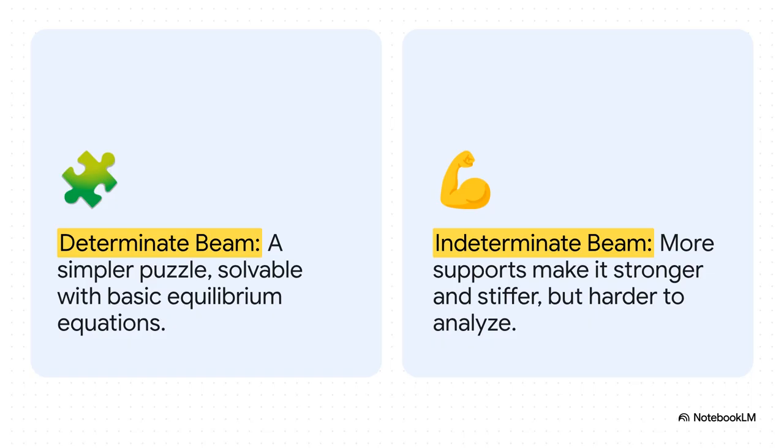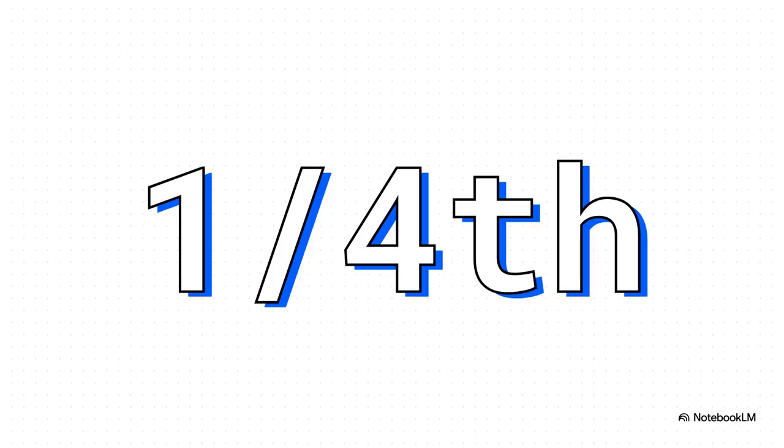So you're probably asking, why on earth would an engineer make their own life harder like this? Well, just look at this comparison. The beam on top, that's our simple determinant one. Easy to analyze. But the one on the bottom, with that extra support right in the middle, that beam is way stronger and stiffer. It can handle a lot more load and it won't bend nearly as much. And the benefit isn't small. It's huge. We're talking about a beam that might bend only one-fourth as much as the simpler version. That's a massive advantage in the real world. Four times less deflection? That's incredible.